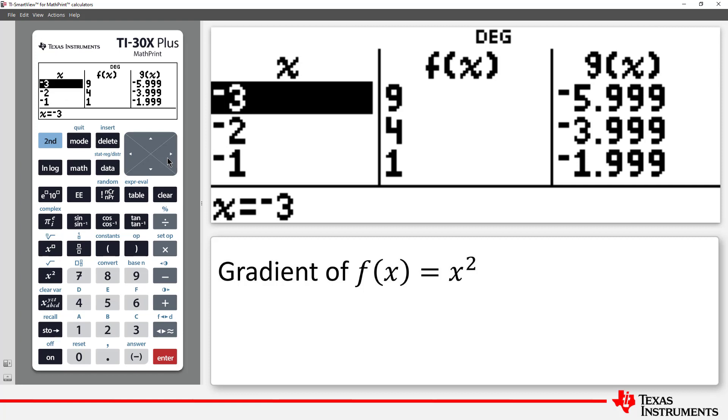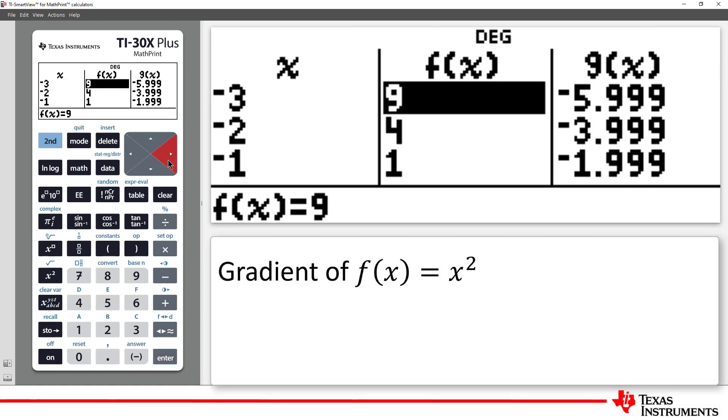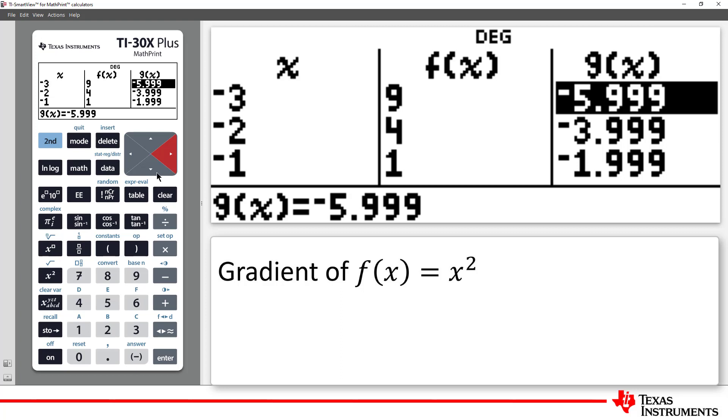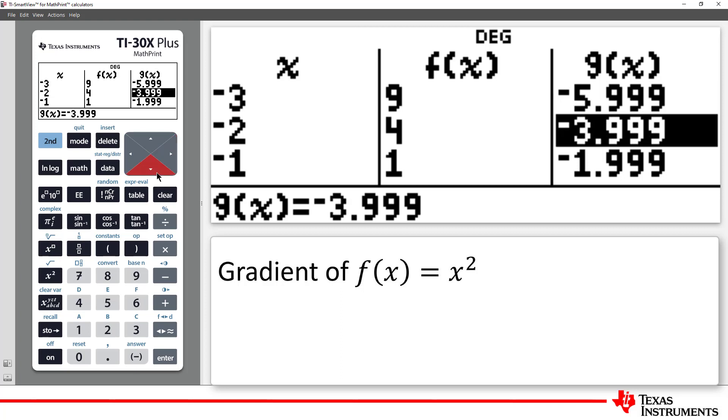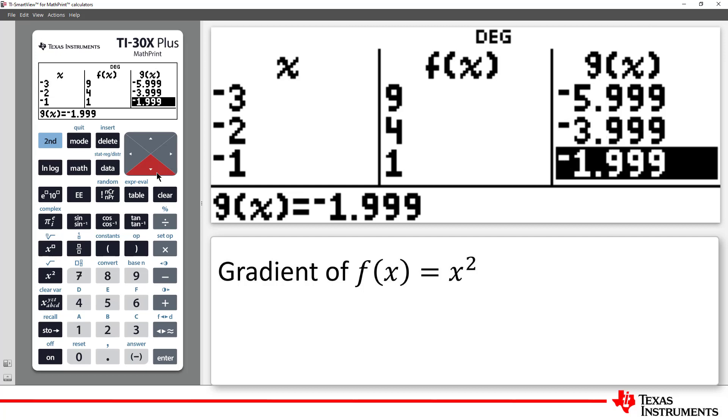And so we see when x is negative 3, f of x is x squared, so 9, but the gradient at this point appears to be approaching negative 6. When x is negative 2, the gradient appears to be approaching negative 4. And when x is negative 1, we see a gradient approaching negative 2.